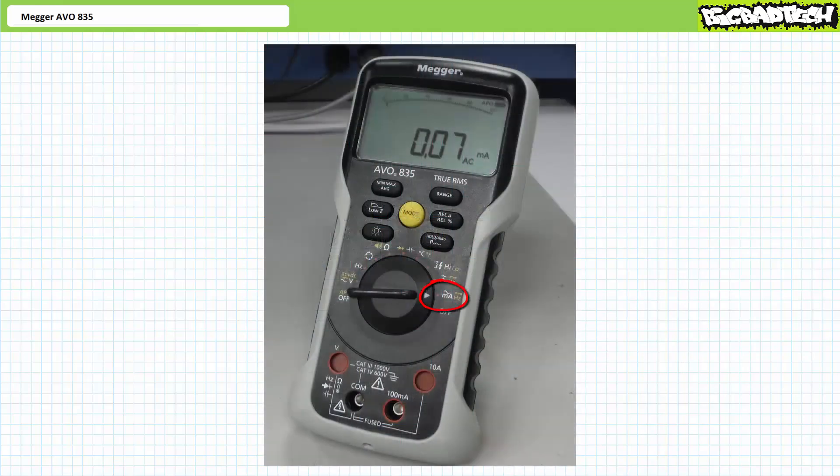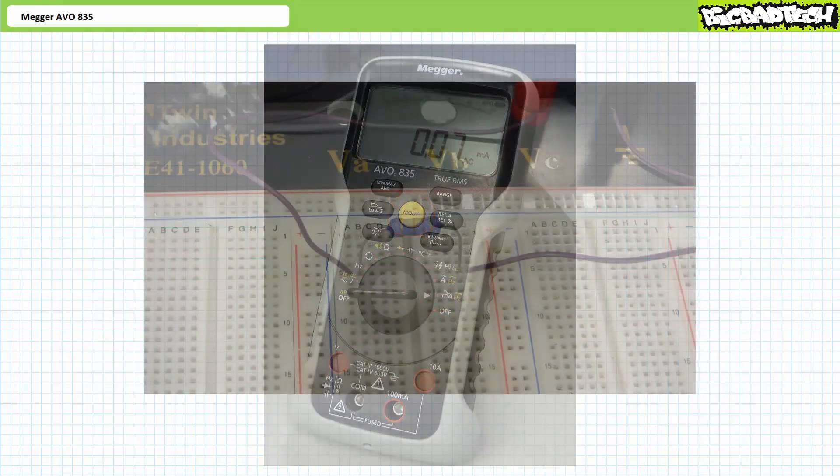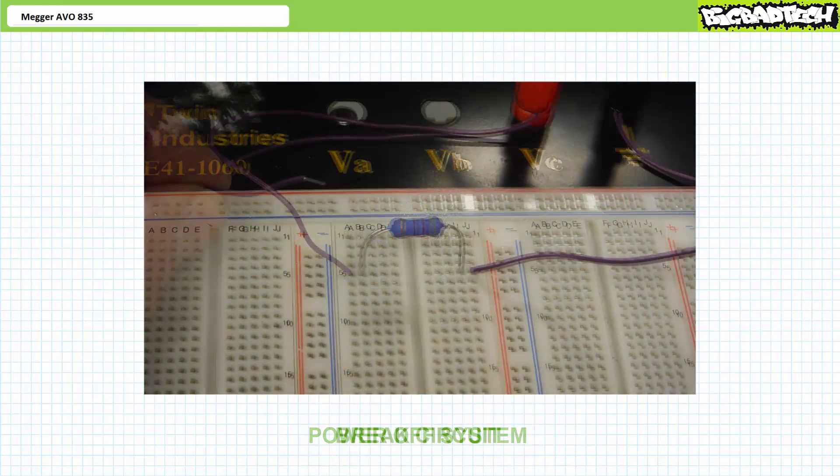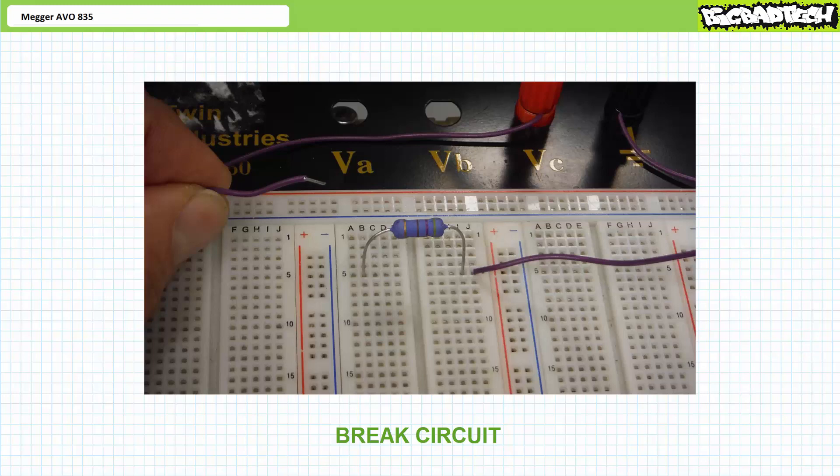Turn the selector switch to milliamps. Press the yellow mode button to change to DC. Power off the power supply. Break the circuit. In this case, we'll break the positive connection between the power supply and the resistor.